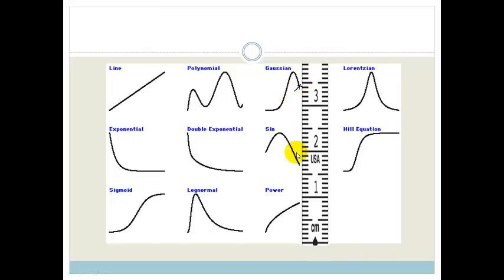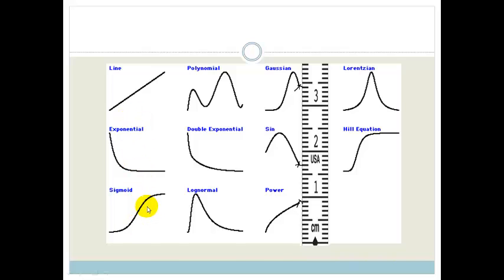it only crosses it once. This is why these are all functions, because for every x value, there is one and only one y value.